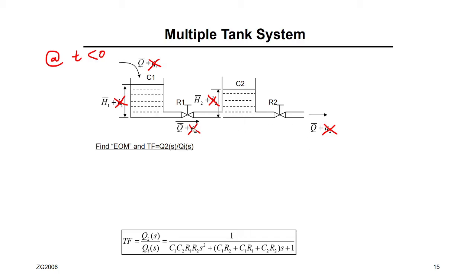At t equal to zero, something has changed. At t greater than or equal to zero, there was a small deviation around the steady state in the flow in — I'm going to call it small qi. This is like it was 22,000 litre per minute or whatever, and this small deviation is like 10, 30, or 50. Small deviation around the steady state.